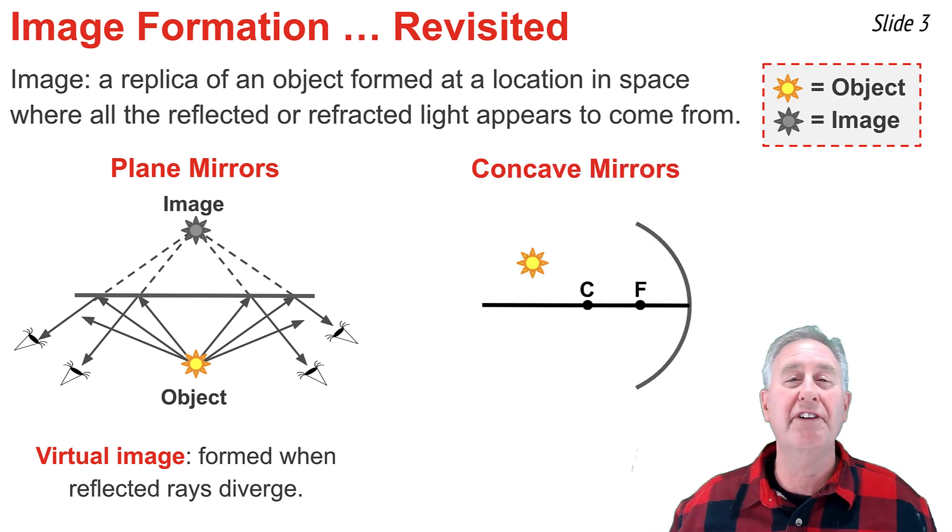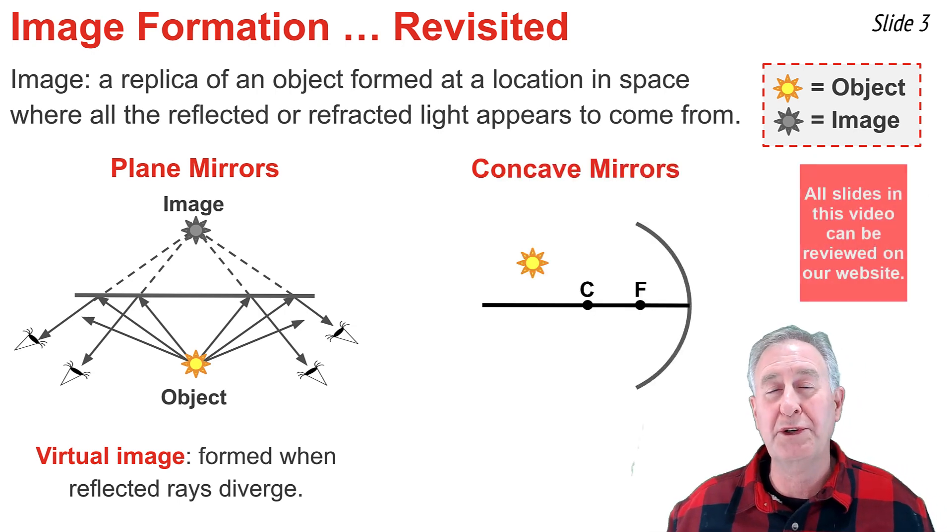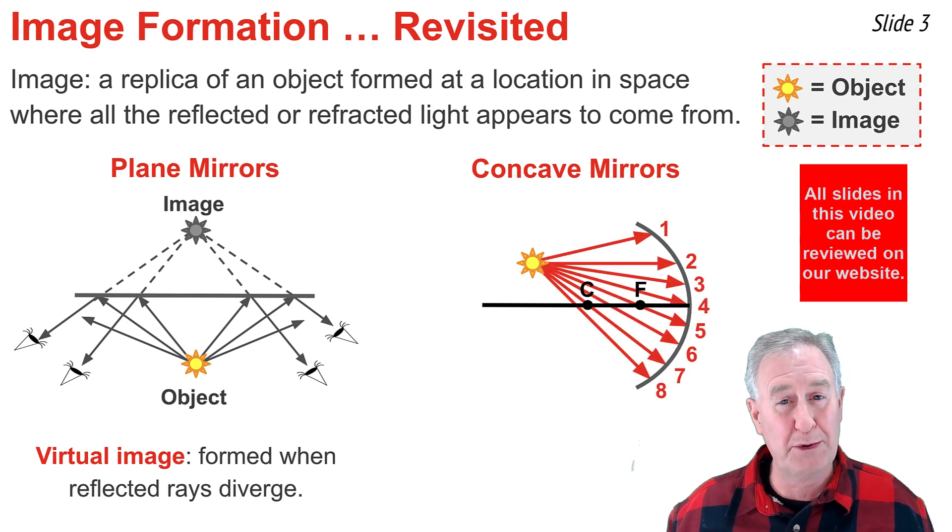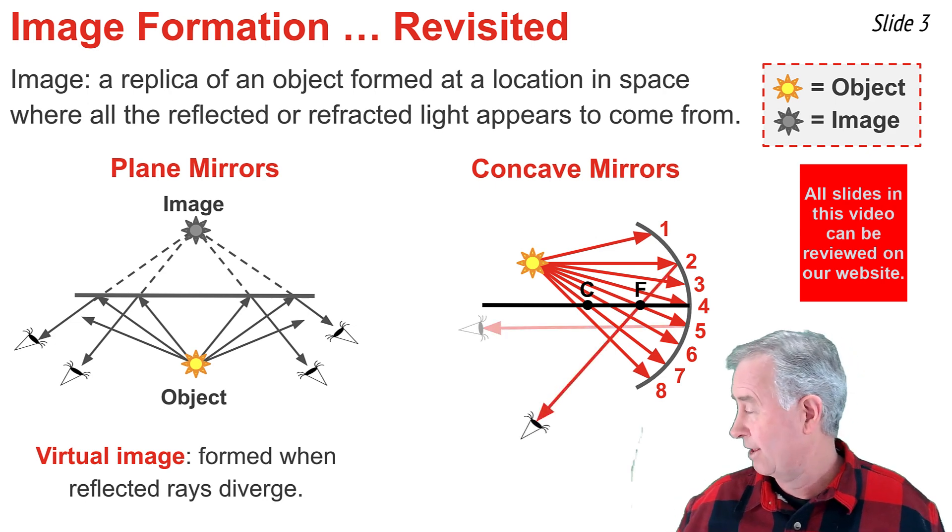Here we see a lightbulb placed in front of a concave mirror. When the bulb is turned on, some of the light from the bulb will strike the mirror as shown by rays 1 through 7. What we know about ray 2 and ray 5, if we are familiar with mirrors, is that they will reflect like this.